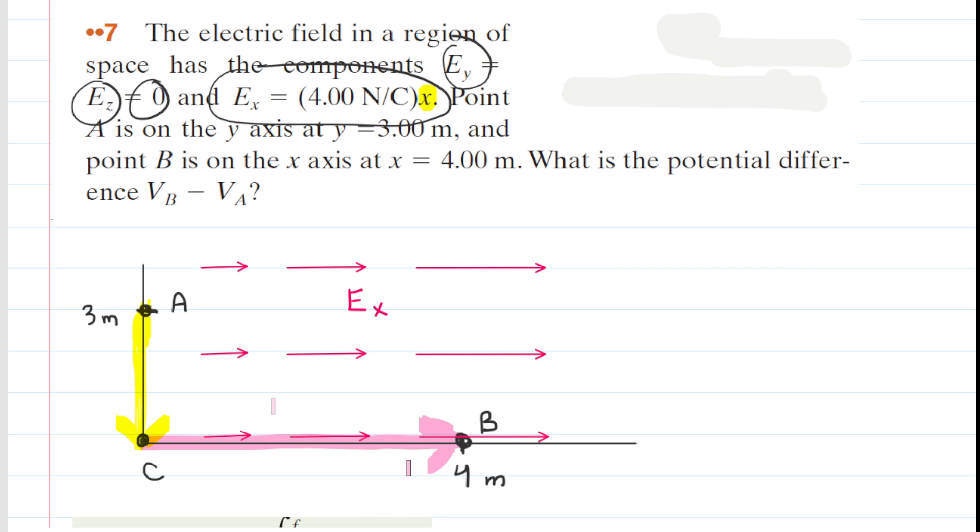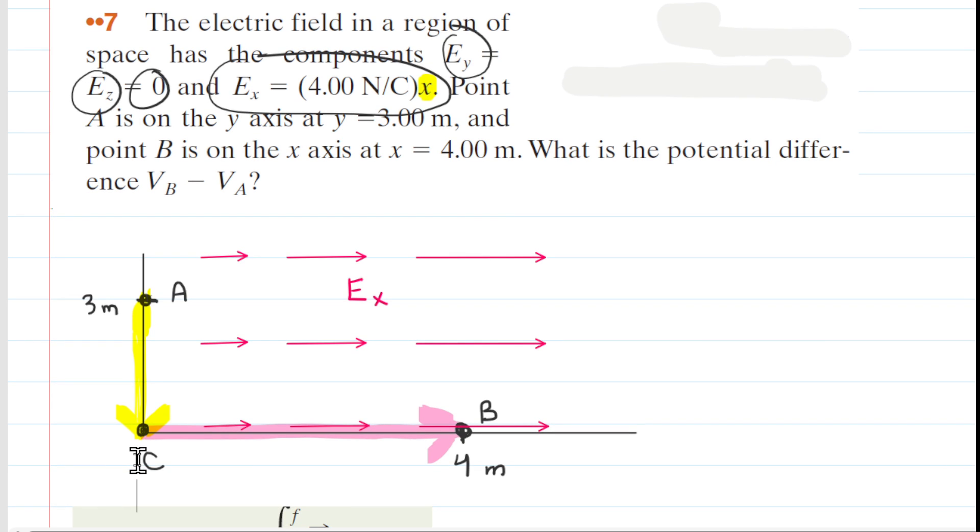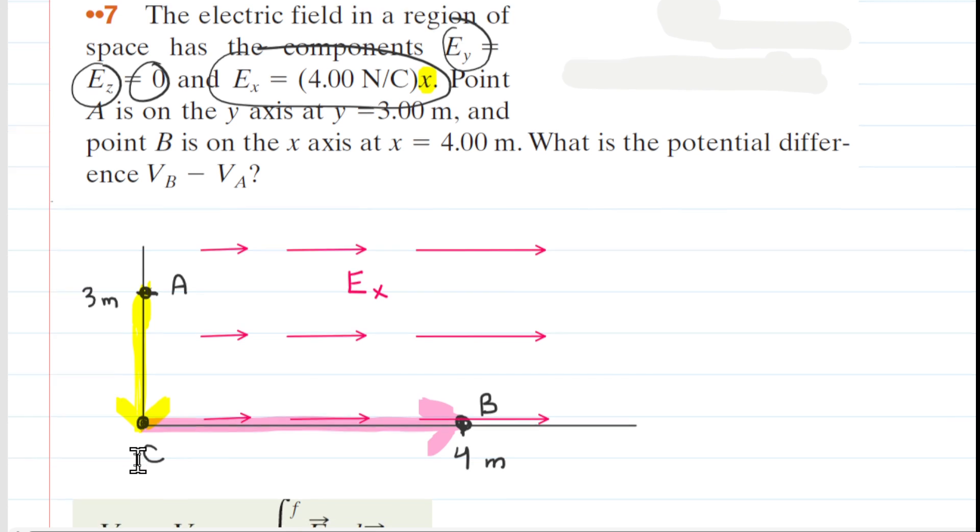It would be like if you wanted to calculate the change in gravitational potential energy as you rode your bicycle up a hill. All that matters is your initial height and your final height. The path by which you get there doesn't. So we can follow a more indirect route. We can go from A to C, then C to B, and then add those potential changes together, and that'll give us the potential difference between points A and B.